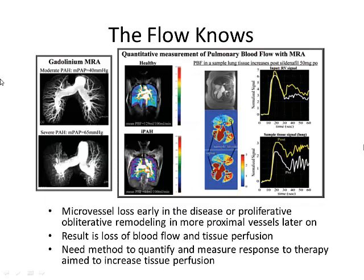This is an example of gadolinium MRA: a normal patient shows normal vasculature, while a PAH patient shows the classic pruning of distal vessels. On an experimental basis, you can also evaluate pulmonary blood flow pre and post treatment. This example shows a patient pre- and post-sildenafil, demonstrating improved pulmonary blood flow after treatment.